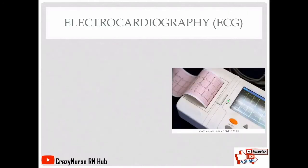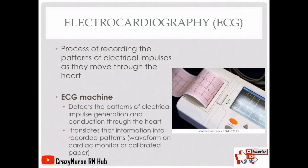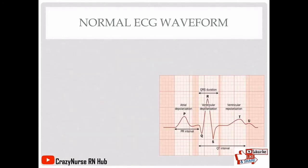Now let's go to electrocardiography, also known as the ECG. It is the process of recording the patterns of electrical impulses as they move through the heart. The ECG machine detects the patterns of electrical impulse generation and conduction through the heart, and translates that information into recorded patterns — called waveforms on a cardiac monitor, or recorded on calibrated paper if done through an ECG machine.